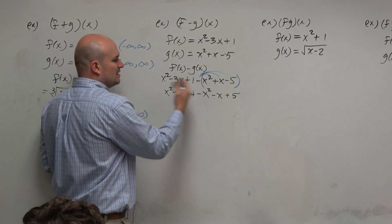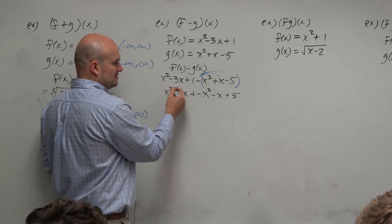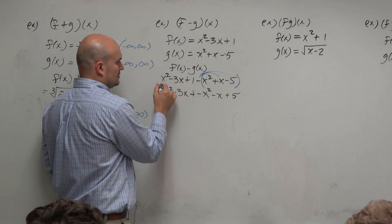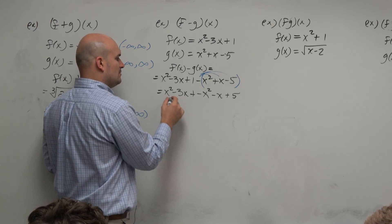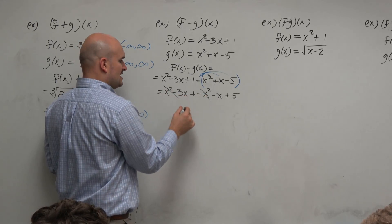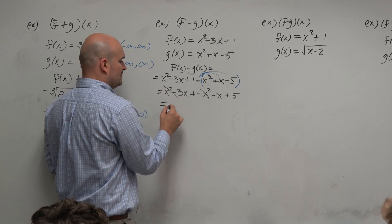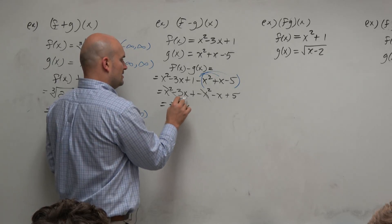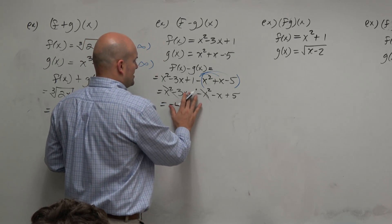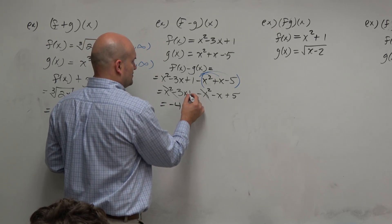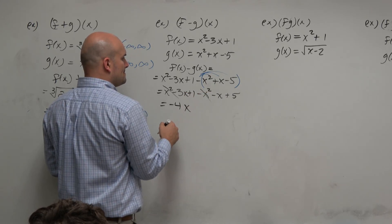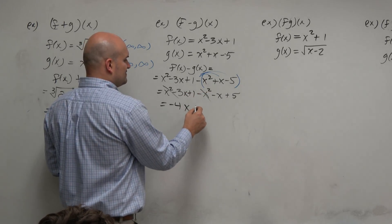Now we can combine our like terms. These x squared terms subtract to 0. But now we're left with negative 3x minus x, so it's negative 4x. And then plus 1, and 1 plus 5 is plus 6.